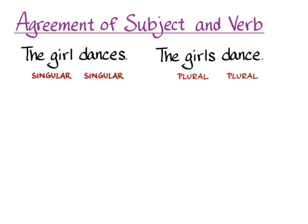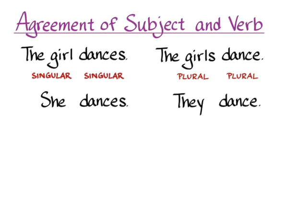In English we can also replace the subject with a pronoun: we could say 'she dances' or 'they dance.' In both cases we're replacing the subject with a pronoun and making sure that the pronoun agrees with the verb — singular pronoun for a singular verb, and plural for a plural verb.